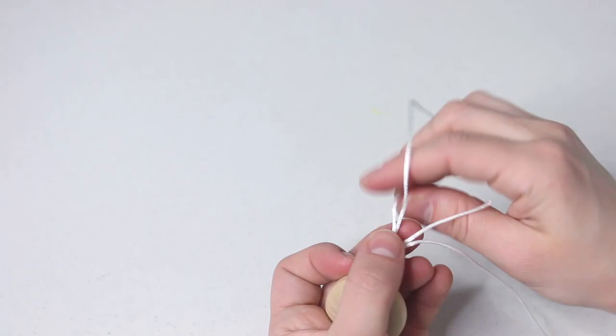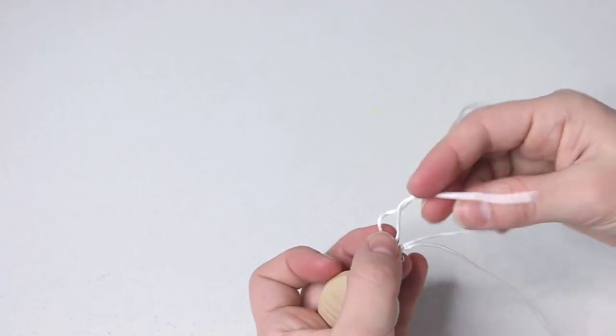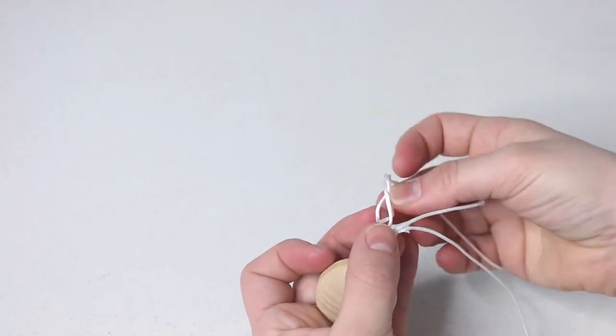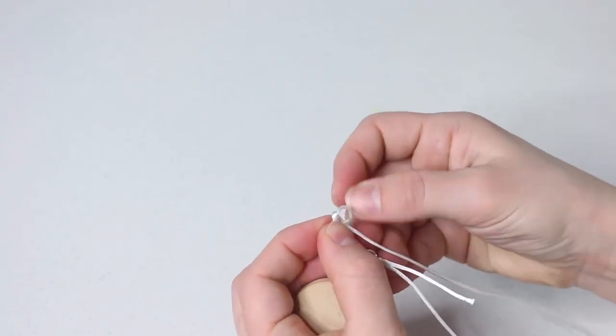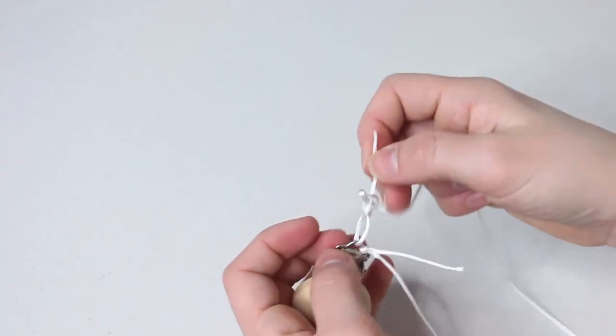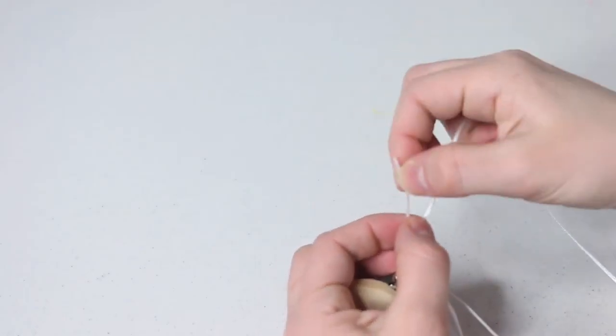And then you just want to repeat this whole process with the other side of the string, wrapping it around two times, pulling it through the bottom loop, and then through that loop that you created when wrapping it around. Pull tight, and there you have it. And then I'll just create one big loop of string basically, and then I'll have no loose ends that the beads can come off on.